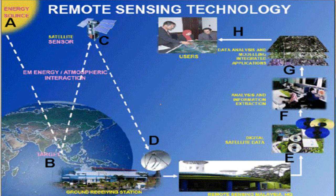You can understand the working of remote sensing technology by going through this image. Follow alphabetically from A to H and you will be able to understand how remote sensors work.